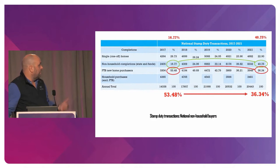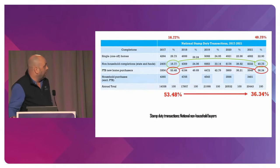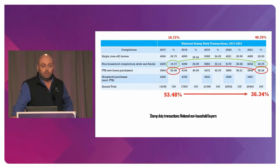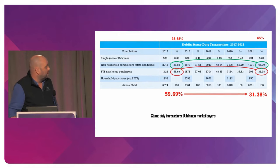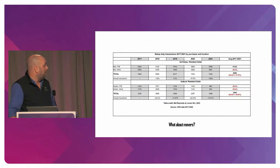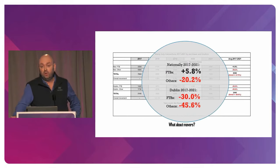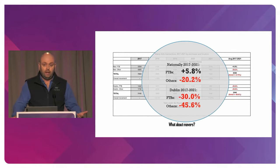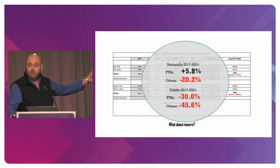First-time buyers and others — this is just stamp duty data. Nationally, non-household completions — the state and funds — have gone from 17% to 41% of housing purchases in the last five years. At the same time, first-time buyer new home purchases have gone down from 54% to 38%. In Dublin, non-household completions have gone from about 36% to 65% — basically from one-third to two-thirds — while first-time buyer new home purchases have gone from 57% to 31%. It's totally flipped. Nationally, first-time buyers in the last five years are up about 6%, but movers are down 20% nationally, and in Dublin first-time buyers are down 36% and movers are down nearly 46%.